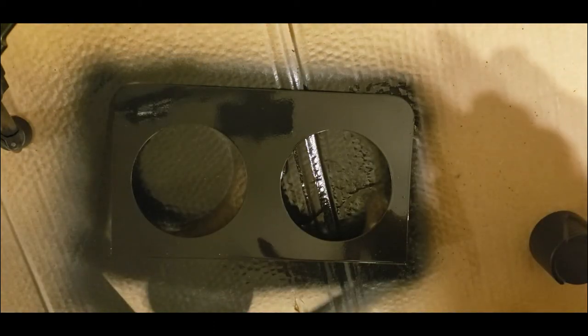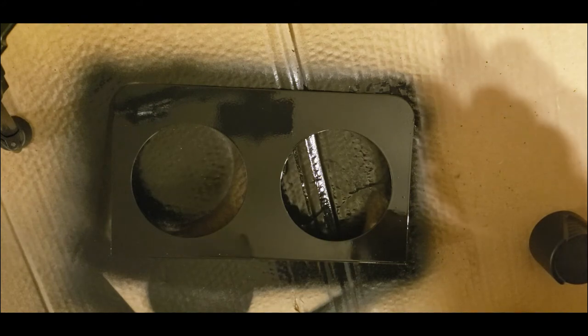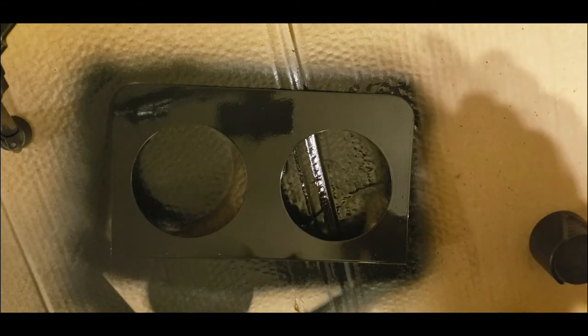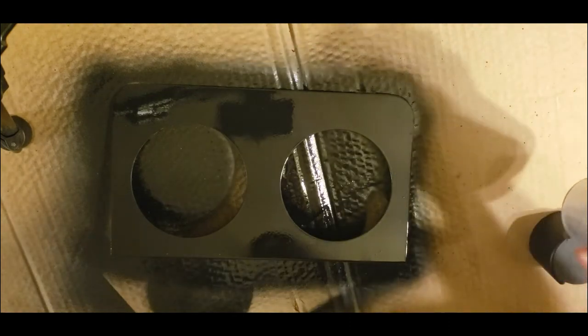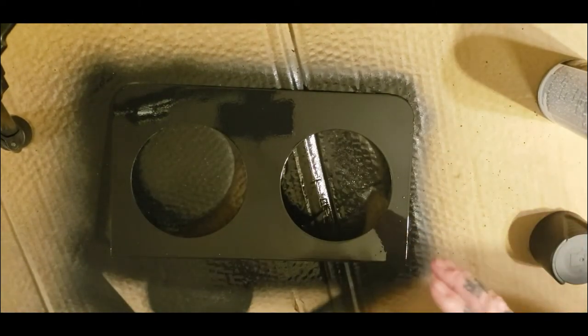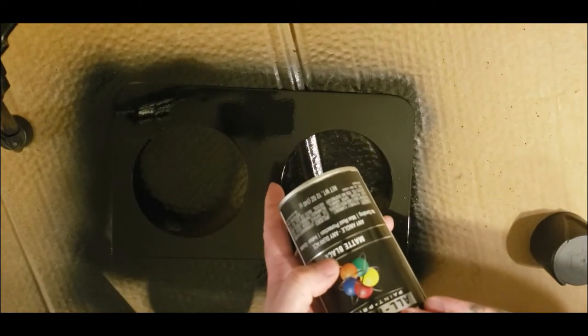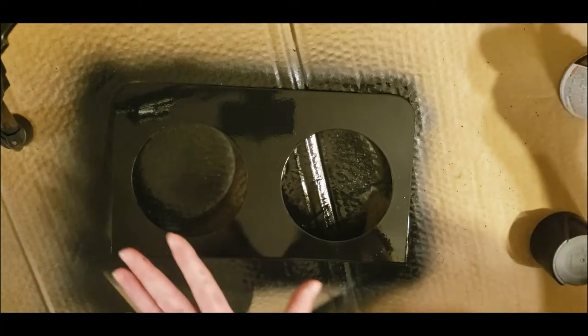Now we're going to let this dry for about an hour to 30, 40 minutes till it's dry to the touch. Then we're going to apply some clear coat on it. Now if you don't want to use clear coat, you can pretty well just let this dry and you'll be good to go. But I'm going to put an extra clear coat on this as this is matte black and I want it gloss. So I'm going to apply some clear coat over top of this. So let's go ahead and let this dry.